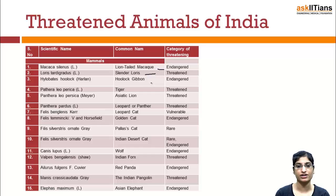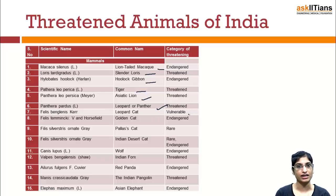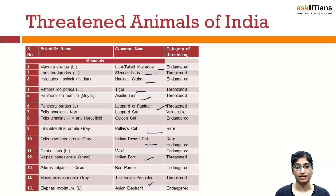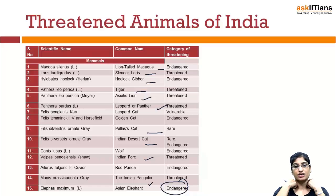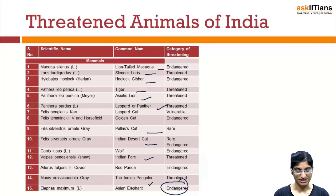Slender loris, Gulogulo — given. Tiger, Asiatic lion, Leopard (Panthera), Leopard cat — they are Endangered or Threatened. Pallas's cat — Rare. Indian desert cat — Rare/Endangered. Wolf — Endangered. Indian fox — Threatened. Red Panda — Endangered. Asian Elephant — Endangered. Scientific names have also been provided, so you should have information regarding the scientific names as well, as questions can appear on those too.